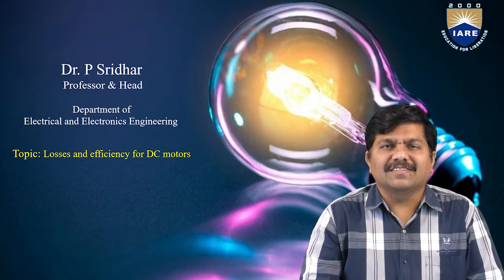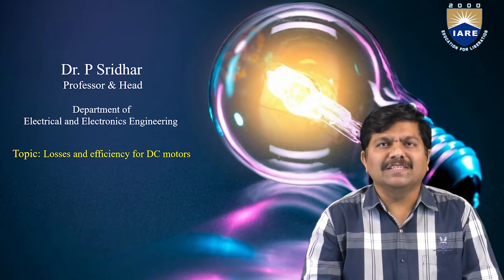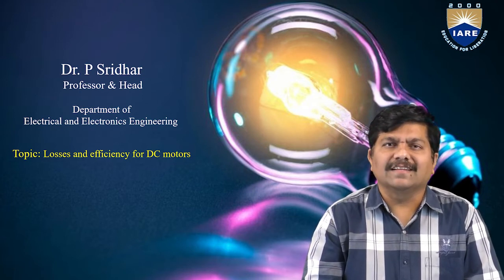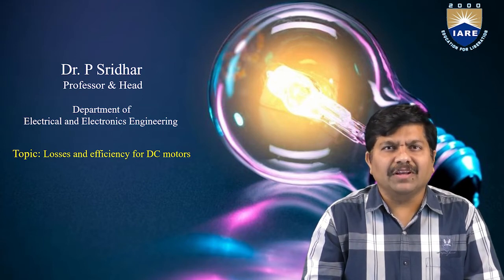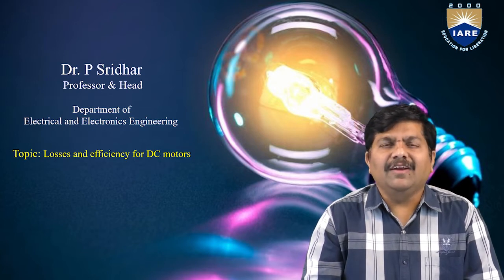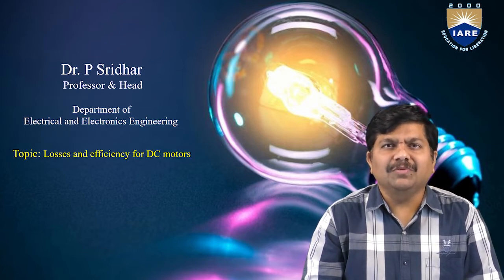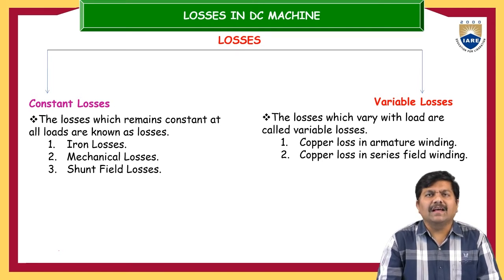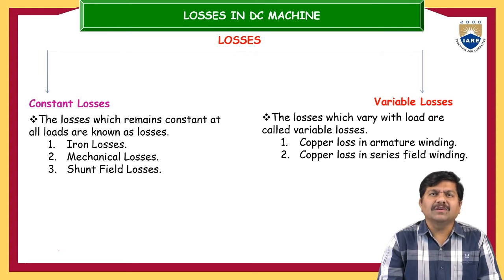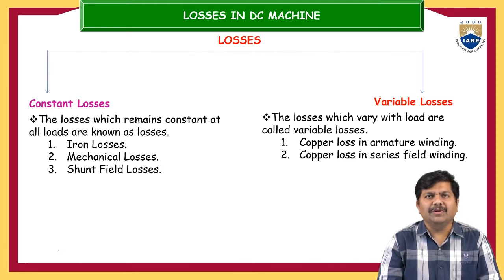Hi, this is Dr. Sridhar. We have another video session on types of losses occurring in the DC machine, how to calculate efficiency, the effect of these losses on efficiency, and the condition to achieve maximum efficiency of a DC machine. This maximum efficiency condition holds good for either a generator or a motor. These are the important topics we are going to cover in today's video session.